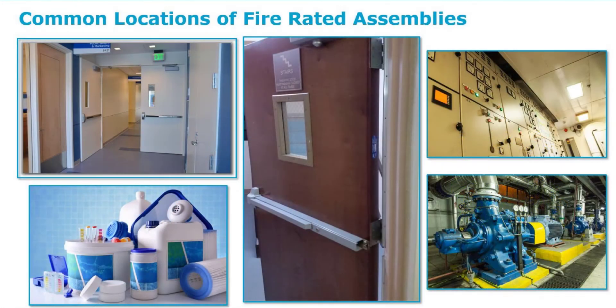Where do we find fire rated assemblies? Key areas include corridors — a corridor is a path of egress, and in a multi-story building that corridor leads to a stairwell, which will be part of a fire rated assembly. We also find fire rated assemblies around high-hazard areas: electrical rooms and certain mechanical rooms, especially where there are large generators.